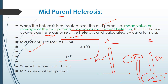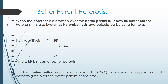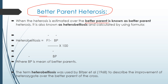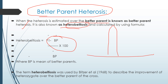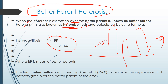The next method is better-parent heterosis, where heterosis is estimated over the better parent. It is otherwise known as heterobeltiosis, calculated by: (F1 − better parent) ÷ better parent × 100. Using the same example — parents of 10 meters and 8 meters — if the F1 hybrid is more than 10 meters, say 12 meters, this is better-parent heterosis. The term heterobeltiosis was used by Bitzer et al. in 1968 to describe improvement of the heterozygote over the better parent.